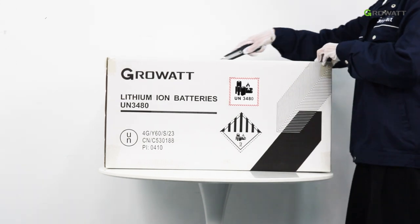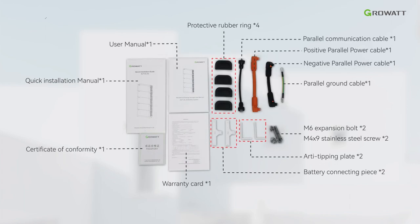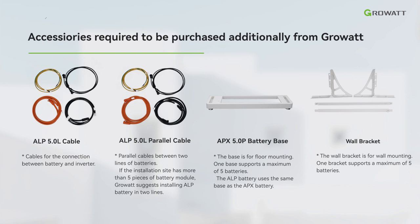Unpack the battery module package and check for any damaged or missing parts. If any issues are identified, please contact your distributor. Products required to be purchased additionally from GrowWatt. These cables are required when installing more than 5 battery modules. The base is the same as the APX battery base.